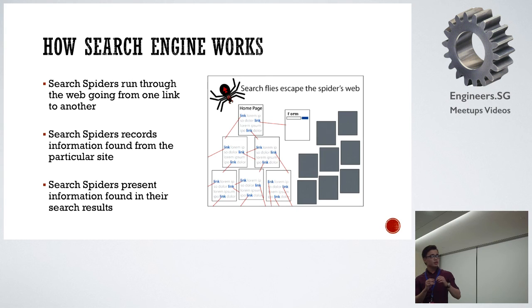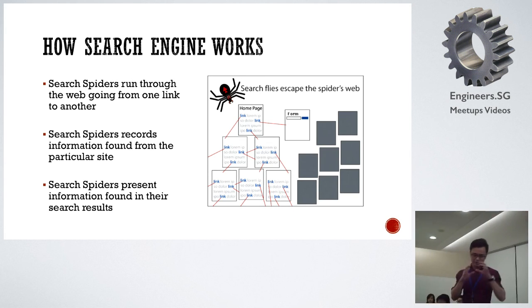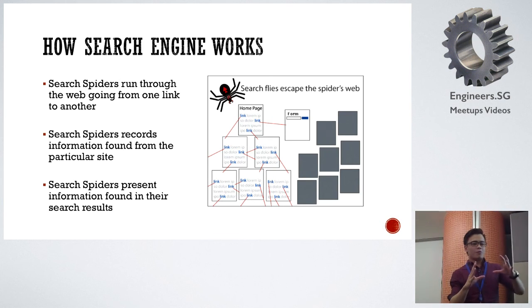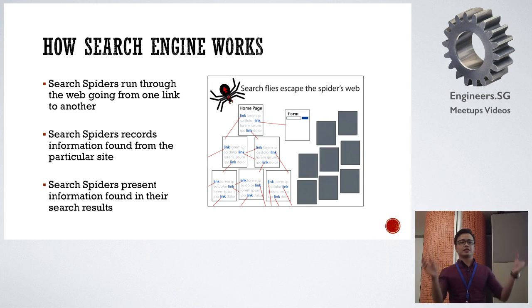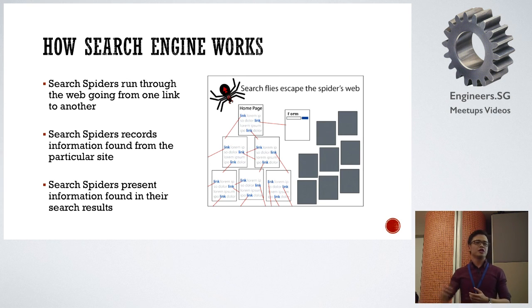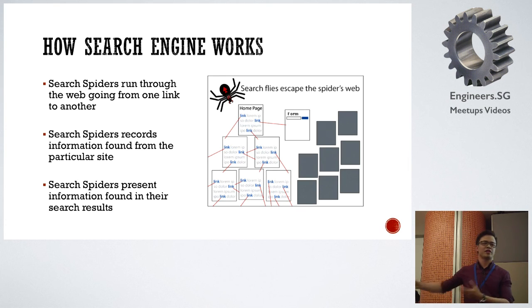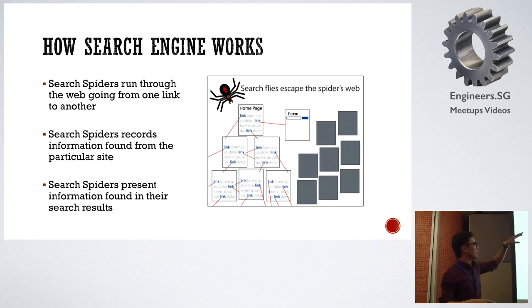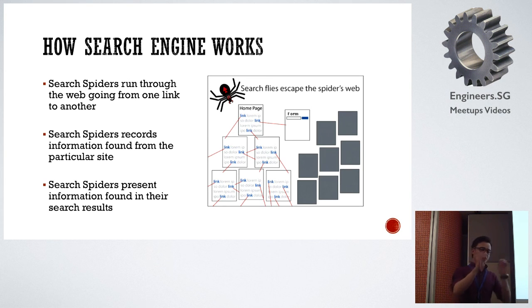Generally, how does a search engine work? We have this idea of a search spider — think of yourself as a little spider crawling around in your little web. The World Wide Web works because one website is linked to another through links. So I have SEO.com.sg, and I link to Robert at robert.com.sg, who links to john.com.sg. Search spiders crawl from my page to his page, and by running through the web from one link to another, they record all the information on the site.